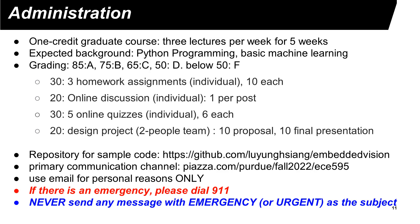The course has 100 points. To receive an A, a student needs to obtain 85 or more points. There are three homework assignments, each worth 10 points. Online discussion is worth 20 points, with each posting being one point. There will be five online quizzes. All of these activities are individual assignments. There will also be a final project worth 20 points, in which you design applications using computer vision technologies for business purposes. You can work alone or in a team of two students.